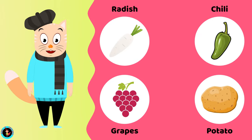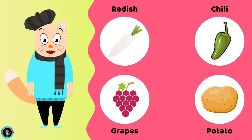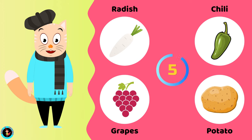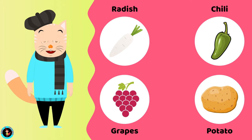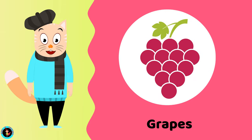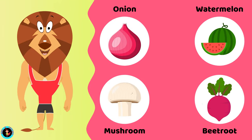Which among these is a fruit? Radish. Chili. Grapes. Potato. The right answer is Grapes. Grapes is a fruit.